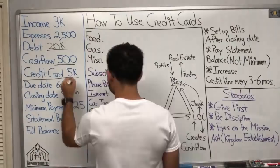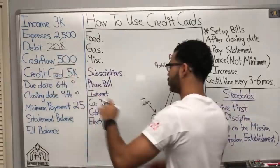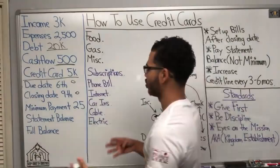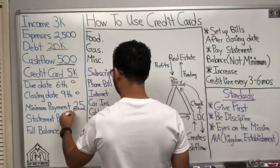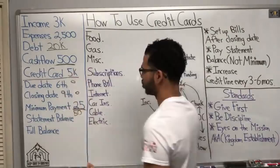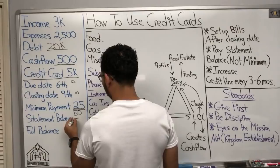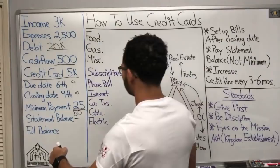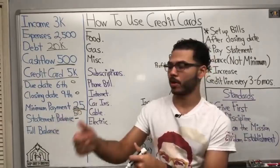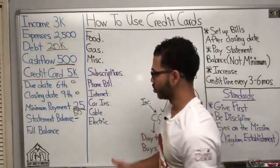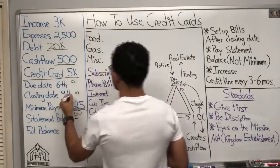There are some important dates we need to know: your due date and your closing date. For my credit card, the due date is always the 6th but the closing date is the 9th. I typically always have a minimum payment of about $25, but depending on how much I owe it could go up to maybe $50. More important than the minimum payment is the statement balance — when we're doing velocity banking, you're using the card to pay your bills.